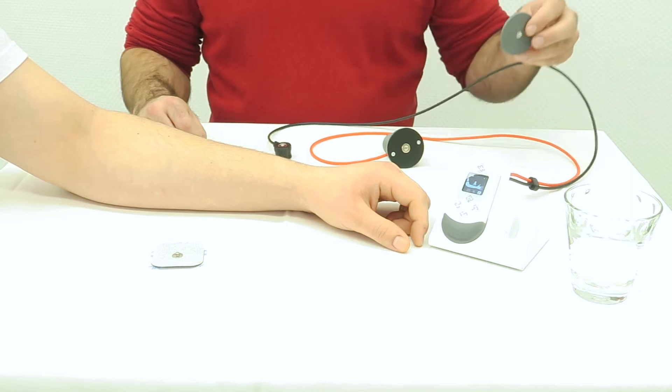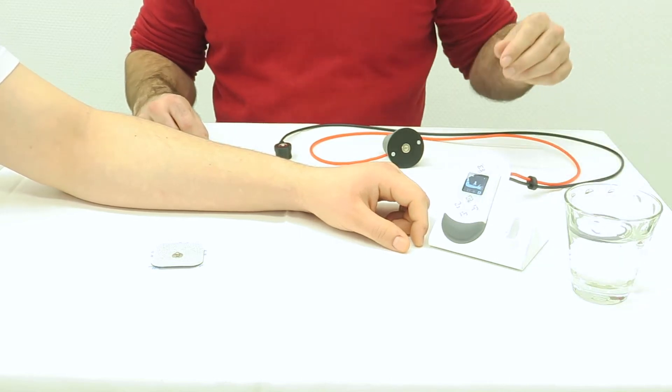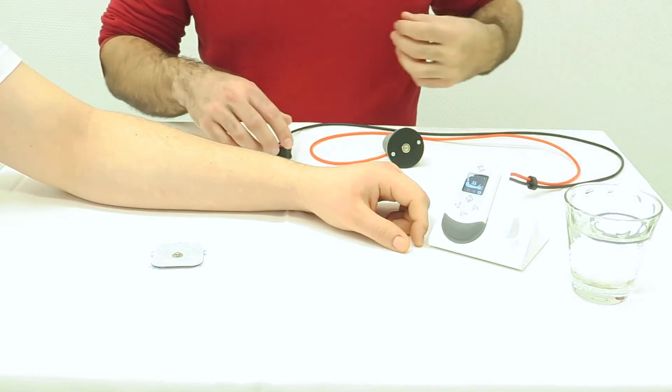Wet the cotton electrode by soaking it in ordinary tap water for 30 seconds.